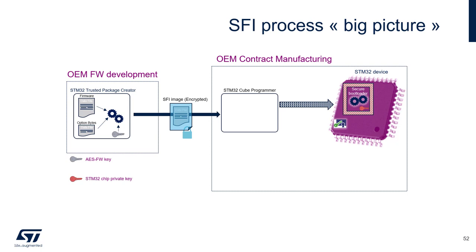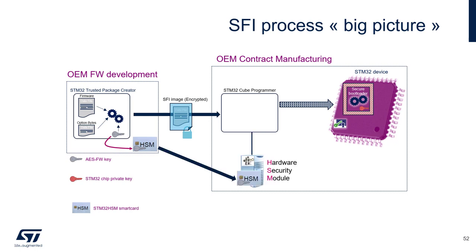To do that, we use a smart card as a locker, called an HSM — Hardware Security Module. When you encrypt your firmware you use an AES key, which should be provisioned to the HSM. Once the firmware encryption key is provisioned in the HSM, there is no way to extract it. The contract manufacturer will receive this HSM and connect it to the programmer.